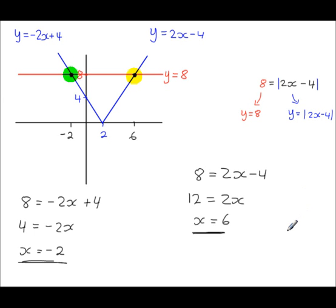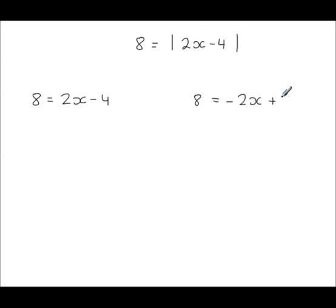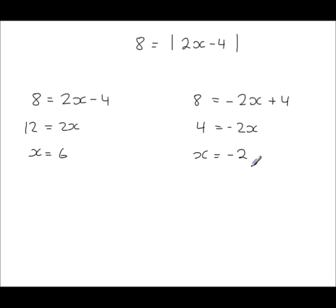Now there's no real necessity to do the graphs. To look at the same solution without graphs: given 8 equals the modulus of 2x minus 4, first write the equation without the modulus — so 8 equals 2x minus 4 — then write it again but change the signs on just one side only. Solving both gives 12 equals 2x so x equals 6, and 4 equals minus 2x so x equals minus 2. Same solutions, but much quicker to solve without the sketch.